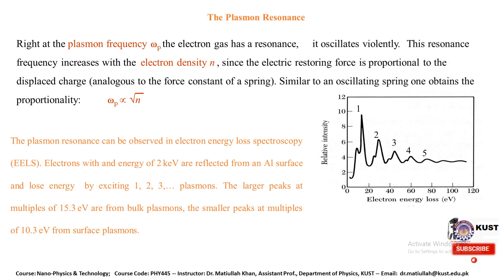At the plasmon frequency, represented by ωp, the electron gas has a resonance and it oscillates violently. This resonance frequency increases with the electron density n, since the electric restoring force is proportional to the displaced charge — like the force constant of a spring. Similar to an oscillating spring, ωp is directly proportional to the square root of n.